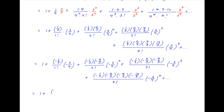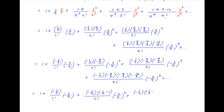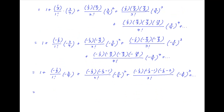This can be rewritten as 1 plus (−1/3) upon 1 factorial times (−3/4), plus (−1/3)(−1/3 − 1) upon 2 factorial multiplied by (−3/4) squared, plus (−1/3)(−1/3 − 1)(−1/3 − 2) upon 3 factorial times (−3/4) cubed, plus and so on.